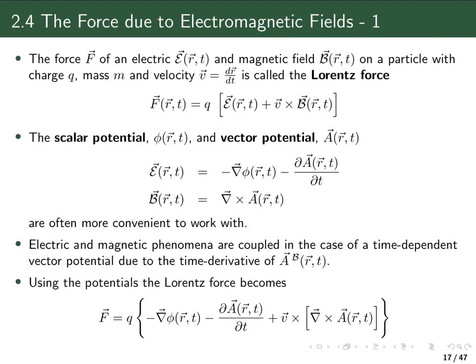Now inserting the potentials into the expression for the Lorentz force, one can rewrite the Lorentz force where we here have the gradient of the scalar potential and the time derivative of the vector potential and here we have the curl of the vector potential. But how does the scalar and the vector potential look like? Well, the electric and the magnetic field here are defined as derivatives, either spatial derivatives or a time derivative.